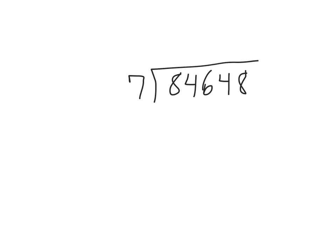So 7 goes into 8 one time, 1 times 7 is 7, so you subtract, bring down the next number. 7 goes into 14 twice, so we put the 2 up there. You always put the number above whichever one you brought down.